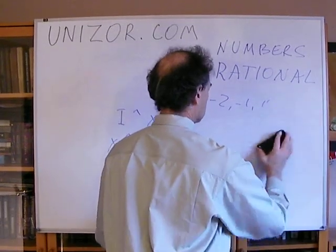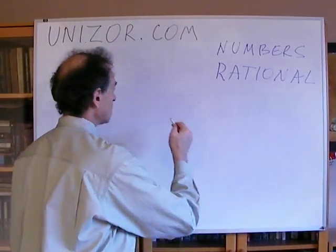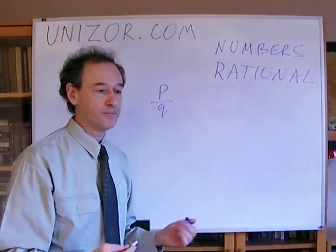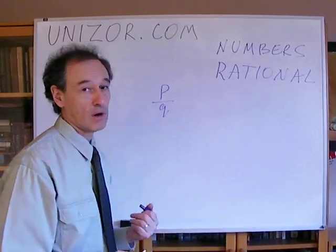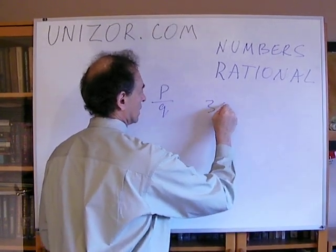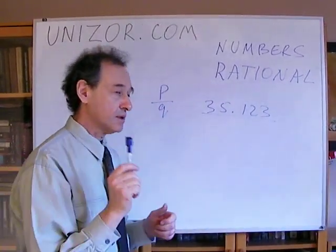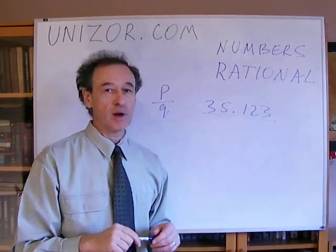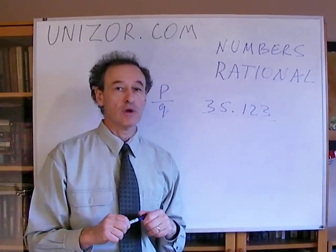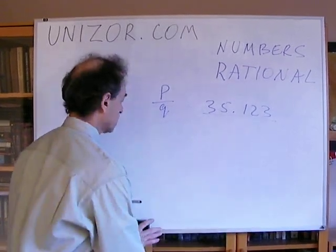As you know, we represent our numbers in decimal system. So, sometimes, instead of using p over q as a representation of a rational number where p and q are integers, sometimes we are using decimal system with a decimal point. So, let's say we have this. This is also a rational number, but is it general enough representation to write down all possible rational numbers which exist in our theory? Well, not quite. It's not really very easy.